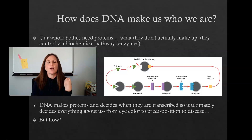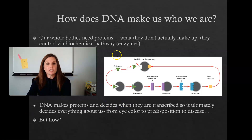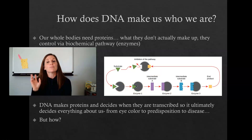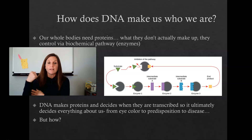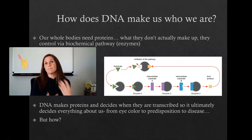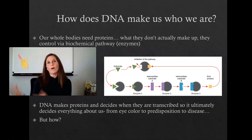DNA makes proteins, and proteins run the show. Each of these gray circles is a protein, and probably some of the yellow, green, purple, and blue shapes are also proteins. Proteins modify other proteins. If you want to flex your muscle, you need proteins to do that because your muscle is made of protein. If you want to send a signal to one part of your body or another, you send it with proteins.